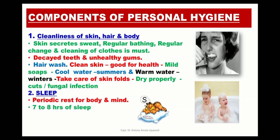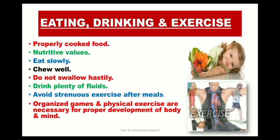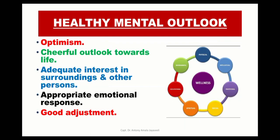We should have at least 7 to 8 hours of sleep. Our eating habits should also be good — we should eat fruits properly, eat slowly, chew well, and drink plenty of fluids. We should also exercise regularly to keep ourselves healthy. For mental outlook, we should be optimistic and cheerful, take adequate interest in our surroundings and in other persons, so that we can have the appropriate emotional response and be able to adjust with each other in society.